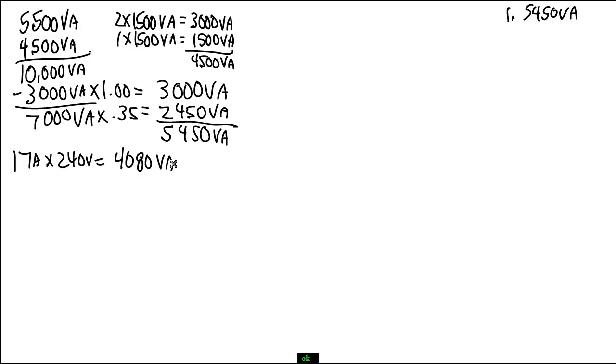So for our second part of our formula, I'm done. Number 2 is 4,080 VA. So let's move on into dryers.